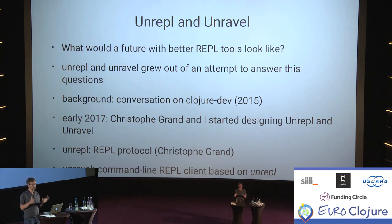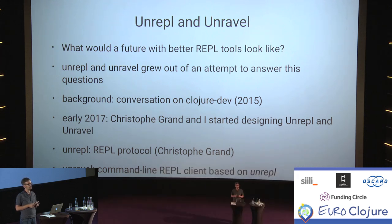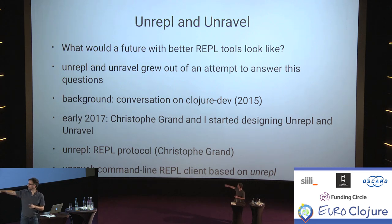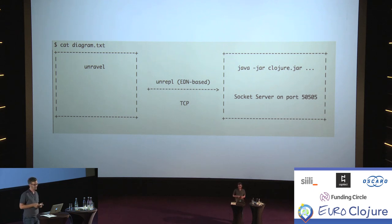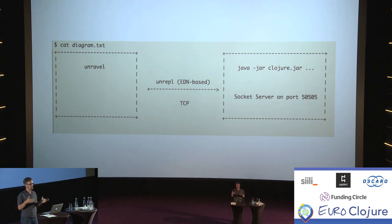UnREPL is the protocol — it's in the same space as nREPL. I know, confusing names. Christophe Grand did all the heavy lifting for the implementation, although I was lucky enough to contribute a couple of design ideas to the protocol. Unravel is the command line client, and it's sort of the first implementation of this protocol. To clarify: Unravel is the client, and it talks to the Clojure process through the protocol called UnREPL.